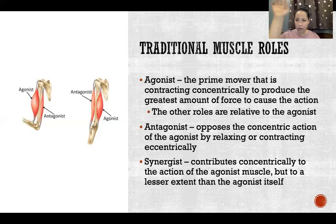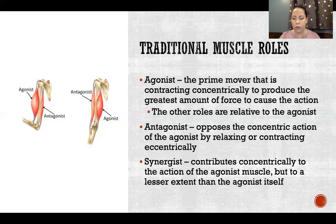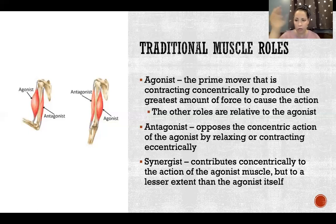If I changed the position of my forearm — if I went into a neutral position or pronation — then I would be changing the relationship between those three muscles. If I'm in neutral, brachioradialis would be the agonist and the other two would be the synergists. And if I went into full pronation, brachialis would be the agonist and the other two would be the synergists. So these muscle roles change depending on what the action is and what the position is — just changing the position of my forearm changed these muscle roles in the same action of elbow flexion.